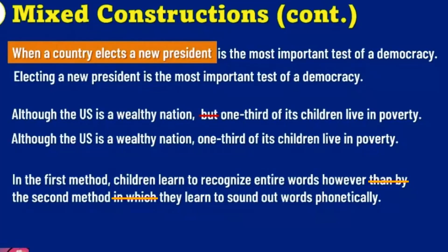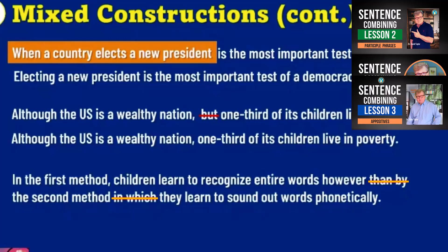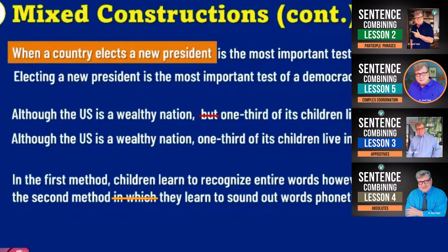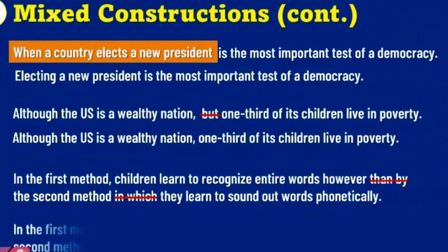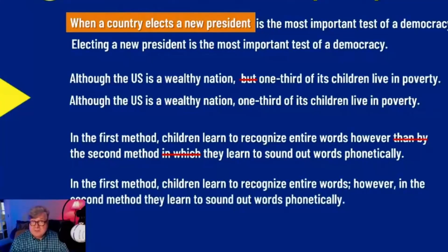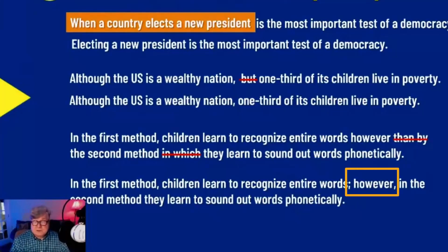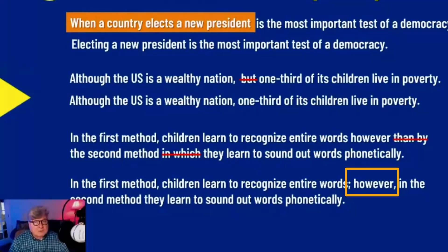That's why I spent eight weeks on sentence combining — so that whenever you want to combine two sentences, you have the tools to do it. In this case, we would say: 'In the first method, children learn to recognize entire words; however, in the second method...' Notice how the use of the semicolon and 'however' sets up good parallelism so that the construction is no longer mixed. We have two equal elements on both sides.